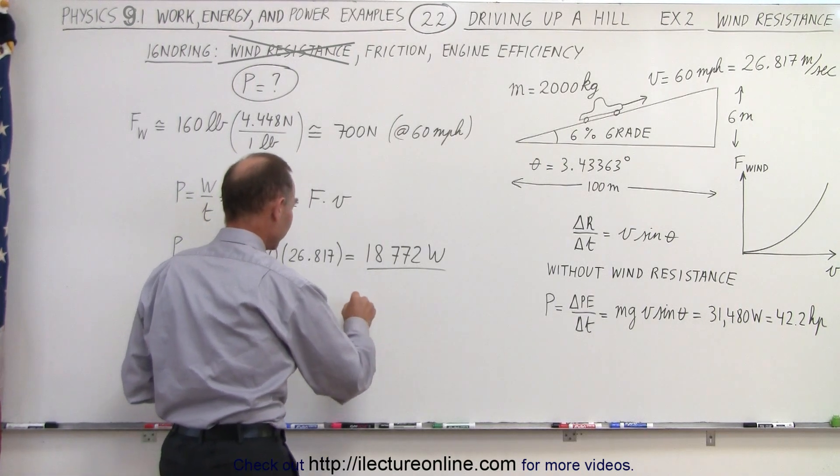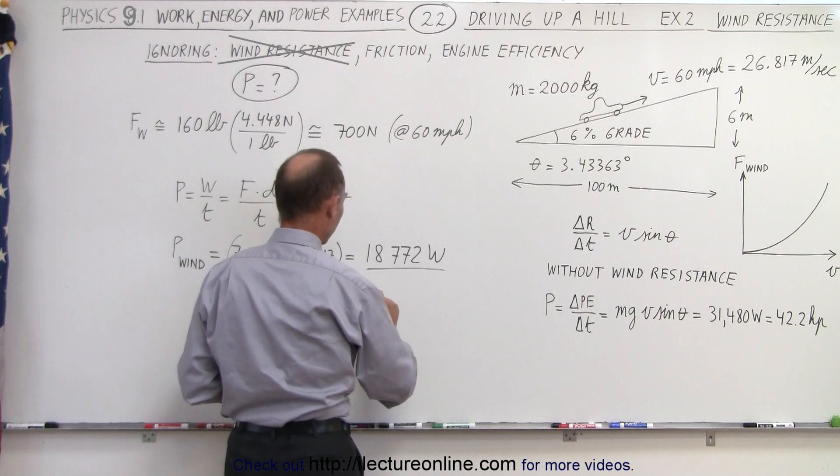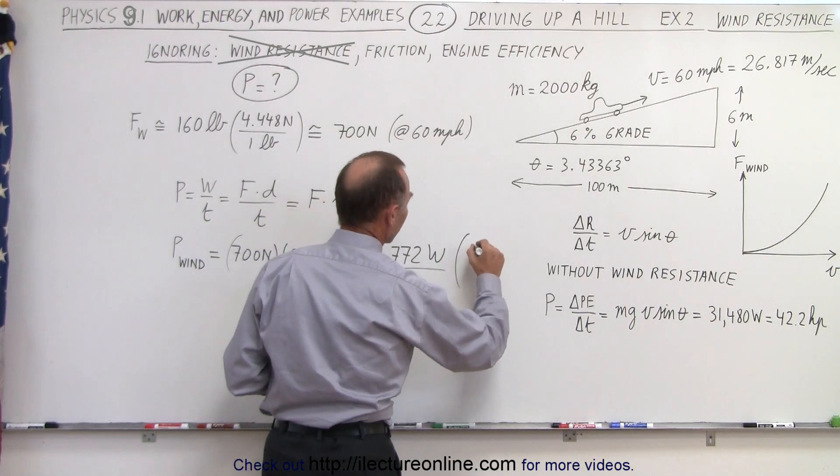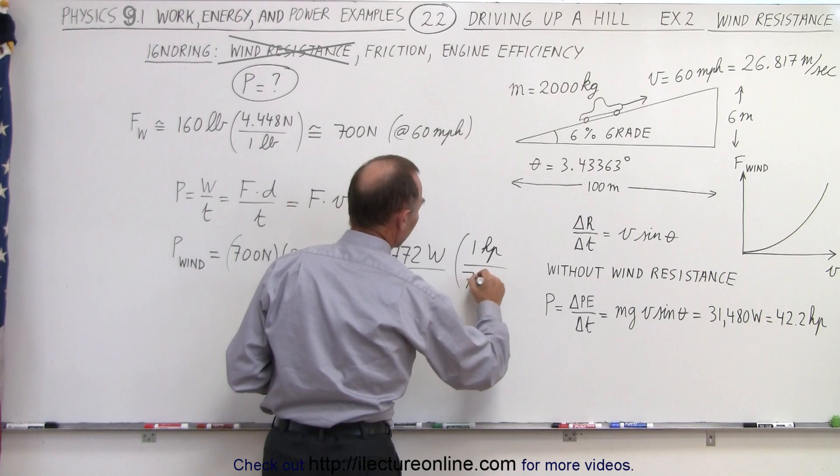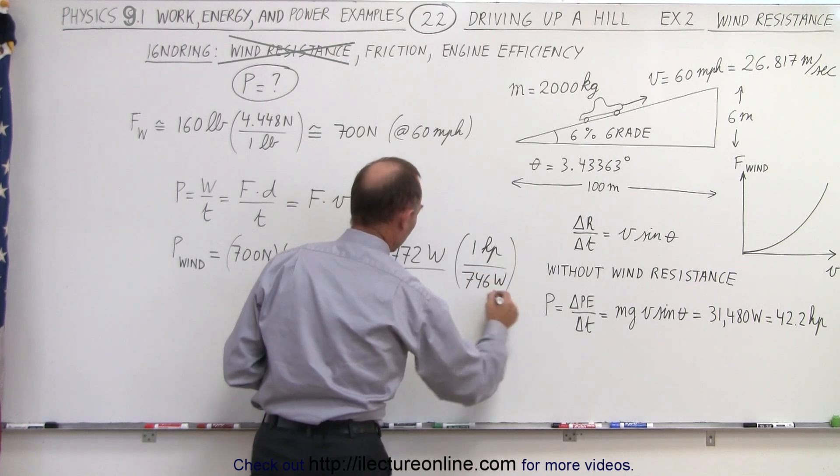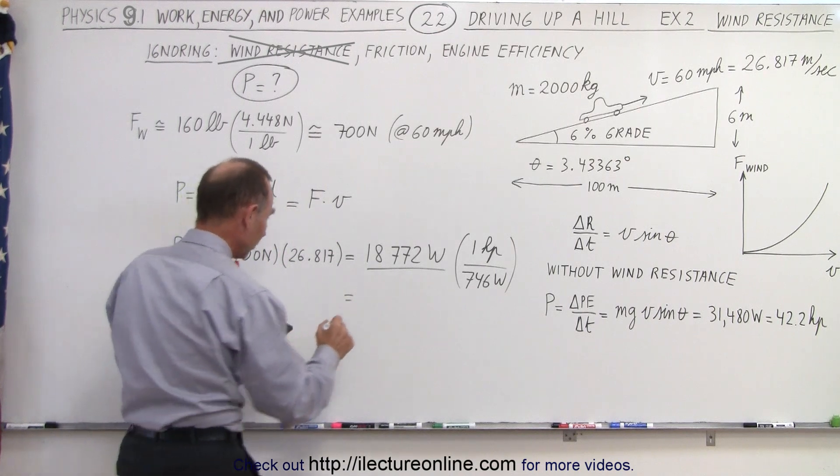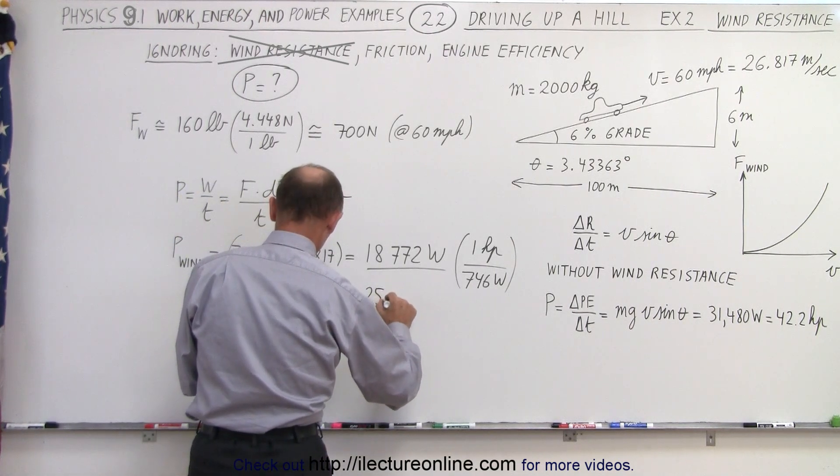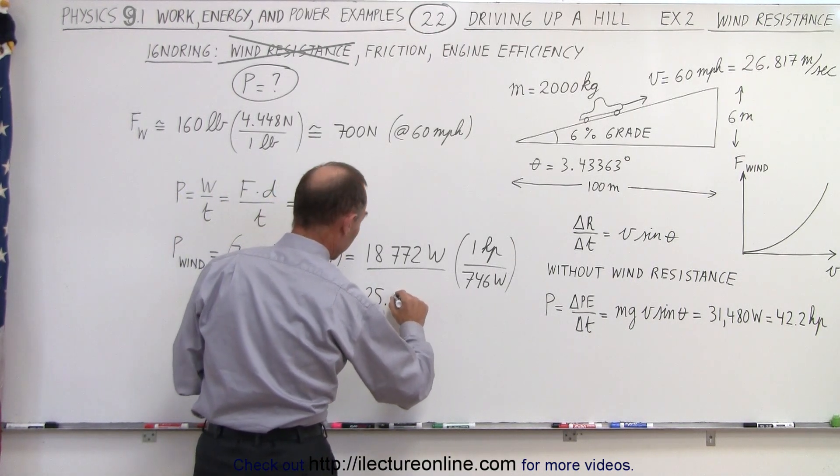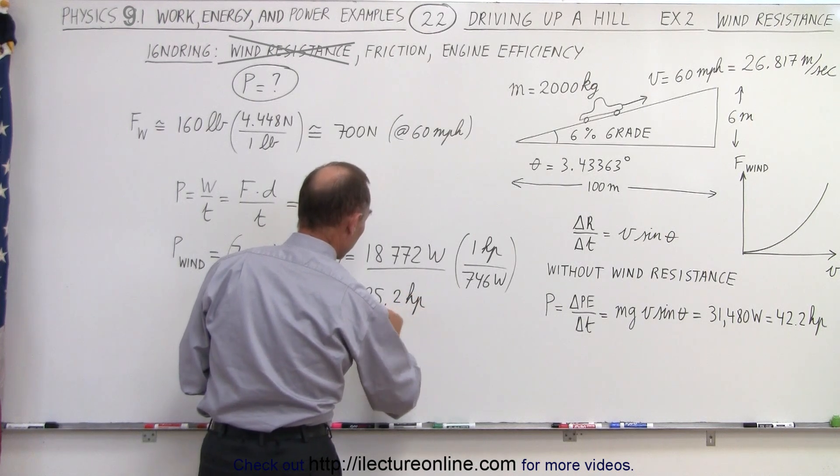And if we convert that to horsepower, we're going to multiply this times one horsepower for every 746 watts. So we take that number, divide by 746, and we get 25.2 horsepower to overcome wind resistance.